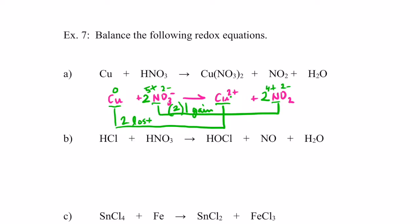Next up is balancing the ionic charge. Copper is not an ion — it doesn't have a charge. The nitrate has a negative one charge and there are two of them, so I have two negatives on the reactant side. On the product side, copper is two positive and the NO2 is neutral, so I have two positive on the product side. That charge does not balance. This doesn't explicitly say acidic, however we have nitric acid here — it is acidic. So we will balance it with H pluses. I need to add four H pluses to the left side to give me two positives as an ionic charge on both sides.